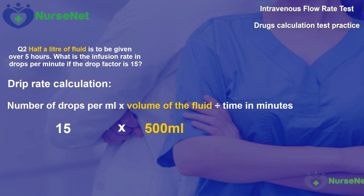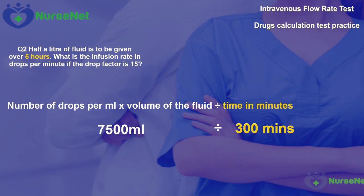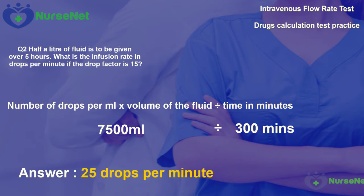Multiplying 15 by 500 millilitres gives us 7,500. Now we divide by the time in minutes. Five hours converted into minutes is 5 multiplied by 60, giving us 300 minutes. Therefore, 7,500 divided by 300 gives us the answer of 25 drops per minute.